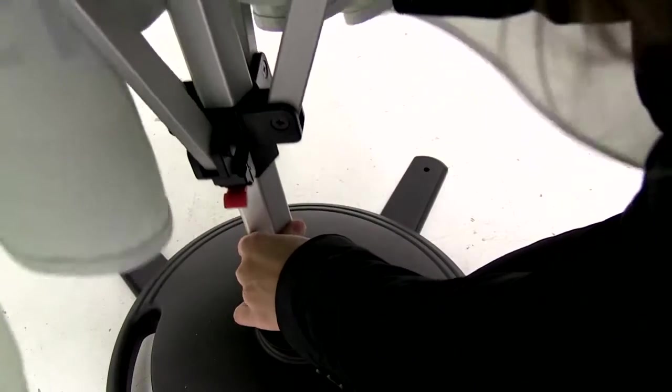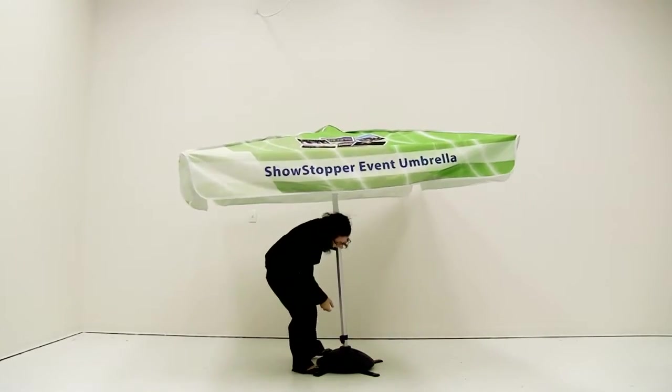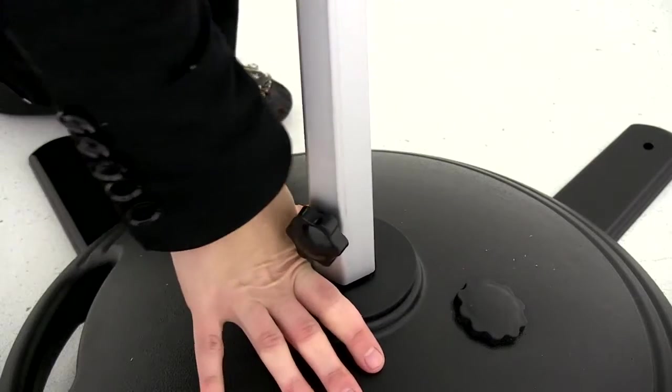Open the canopy by raising up the height adjustment connector until it clicks into place. To raise the canopy's height, push up the height adjustment connector until it clicks into place.